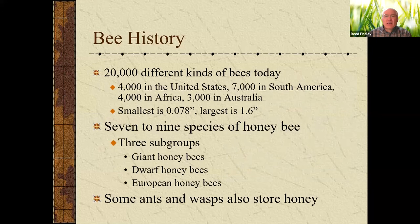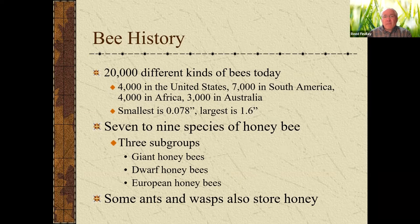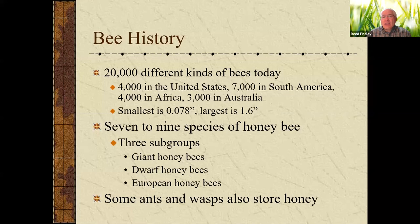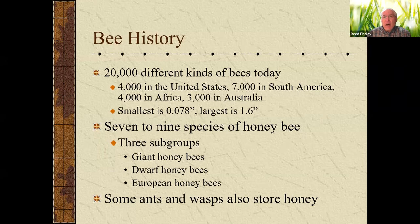There are 20,000 different kinds of bees today — 4,000 just in the United States, and about 7,000 different types in South America, then thousands of others in other places. The smallest is a very tiny bee and the largest, like the Madagascar giant honeybees, are almost two inches big. There are three basic subgroups: the giant honeybees, which are in more tropical areas and have their honeycomb outside the nest; then there are dwarf honeybees, really small bees; and other non-stinging type bees, some of which are in South America.